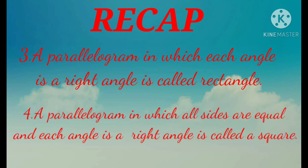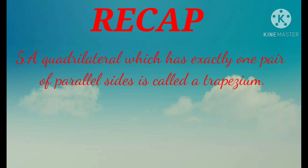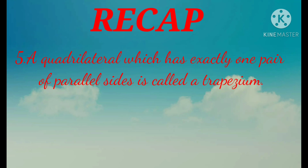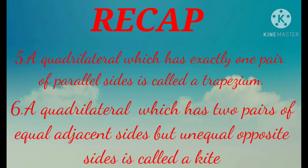A parallelogram in which all the sides are equal and each angle is a right angle is called a square. A quadrilateral which has exactly one pair of parallel sides is called a trapezium. A quadrilateral which has two pairs of equal adjacent sides but unequal opposite sides is called a kite.